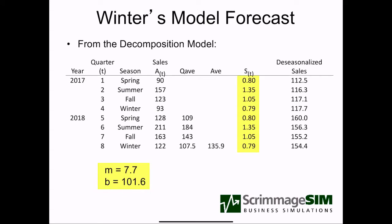Using decomposition, we can determine an overall average — that's our level. We can determine four seasonal factors. And we also have the trend from regression. So when we use decomposition, we can get the components we need for Winter's model.